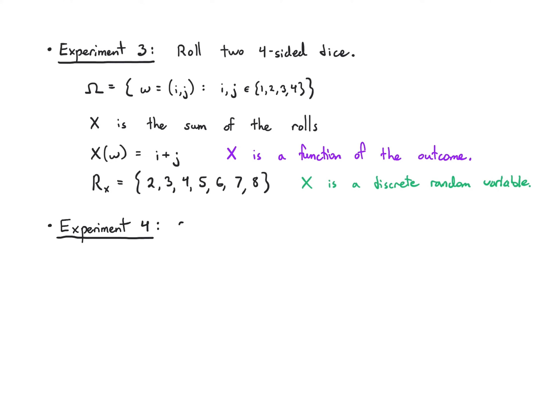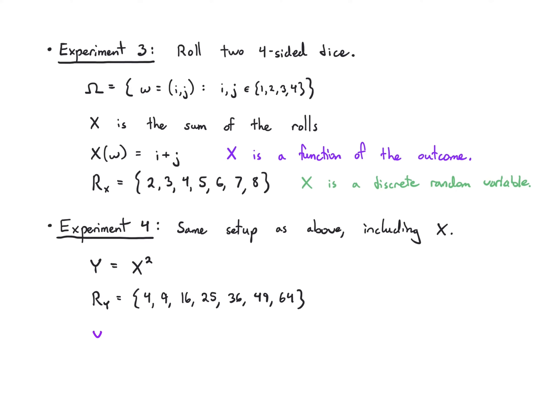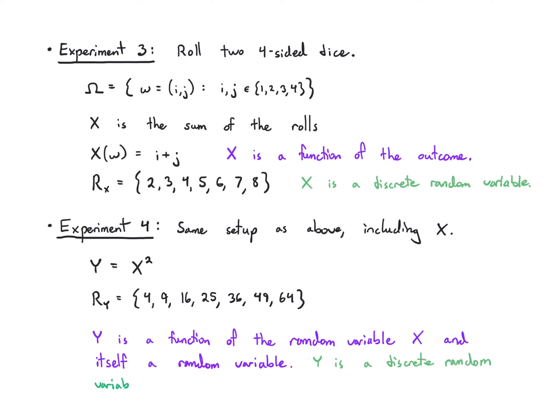Staying in the same setup, we keep X as the sum of the rolls and take Y to be X squared. What's the range of Y? We just square all the possible values of X and get 4, 9, 16, 25, 36, 49, 64. Y is a function of the random variable X and is itself a random variable, because a function of a function is just another function — that's the definition. It's discrete because there's a finite number of choices for values of Y.